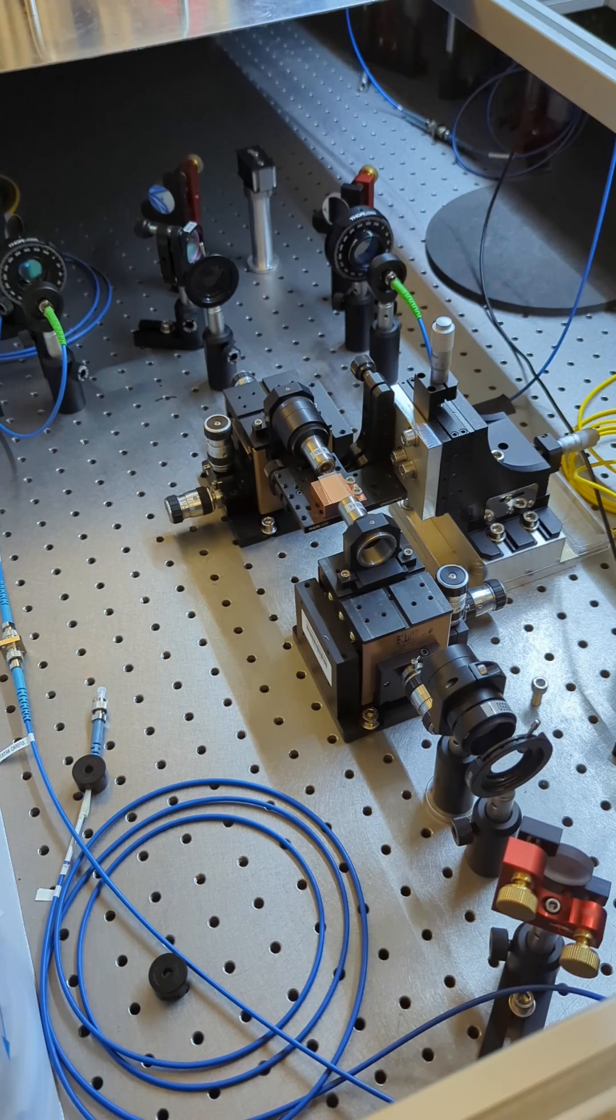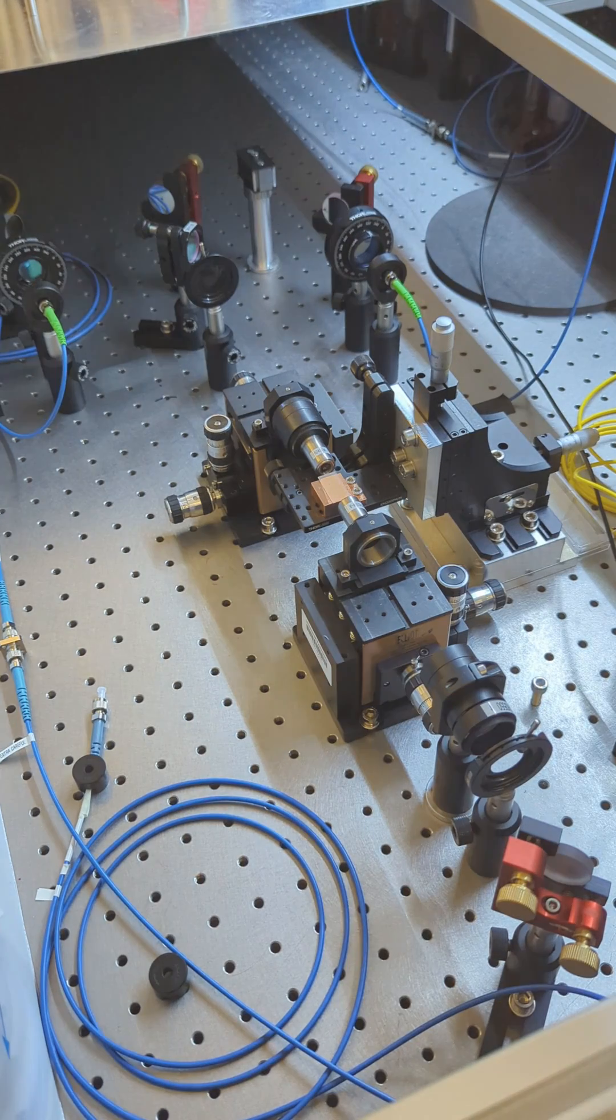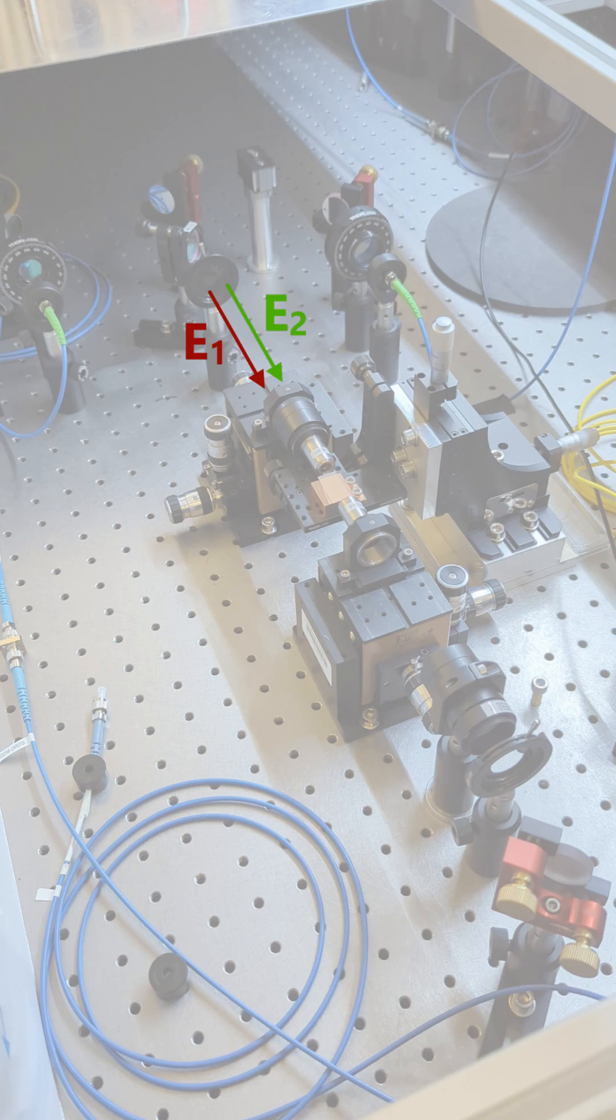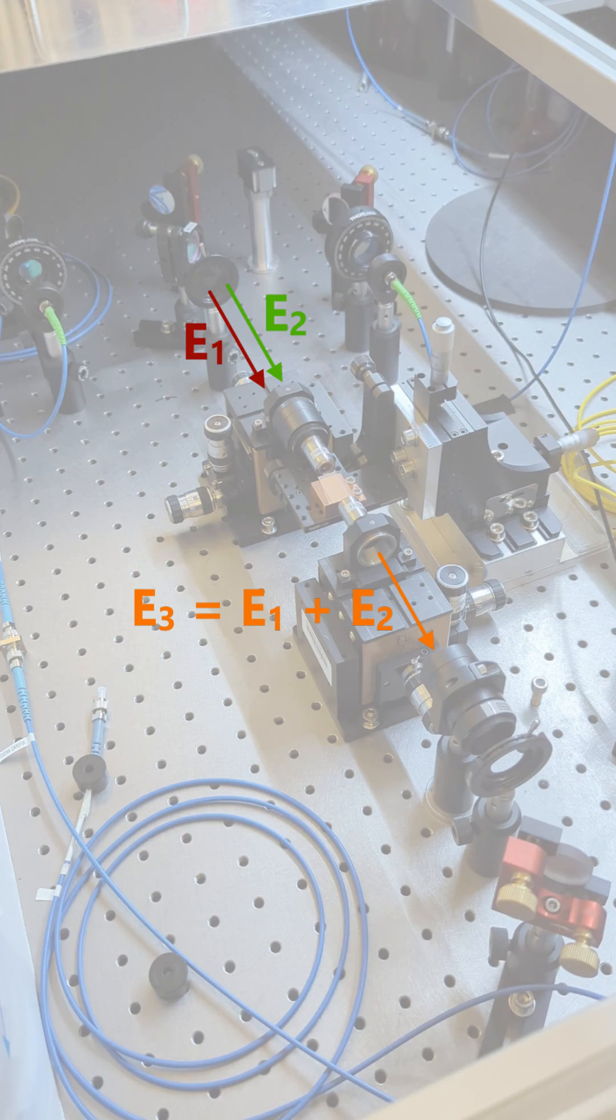Every laser beam has a specific energy and when we talk about SFG we combine two lasers so that the energies add up and we can create new laser light which energy is then given by the sum of the two input energies.